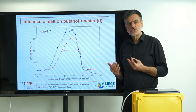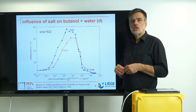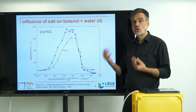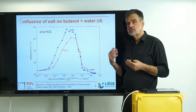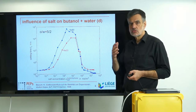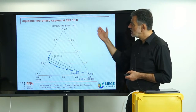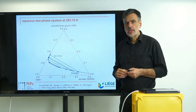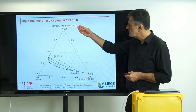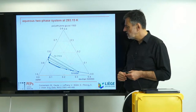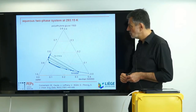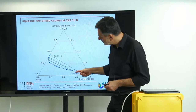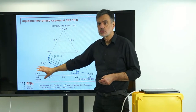In order to understand the origin of this interfacial potential difference, I would like to introduce a special system. We will see in the end that potential differences occur for all interfaces, but in this case the understanding will be easiest to access. What we want to look at is a so-called aqueous two-phase system. An aqueous two-phase system contains mostly water and in this case two polymers — polyethylene glycol with a molar mass of 1500, and dextran with a molar mass of 500,000 grams per mole. You see we have a zoom in to the water corner of our ternary diagram with a binodal and tie lines.